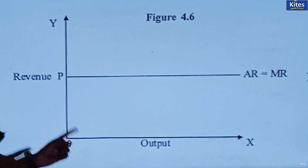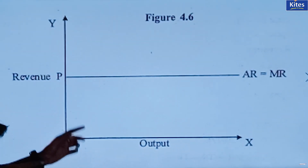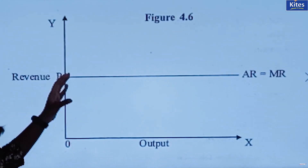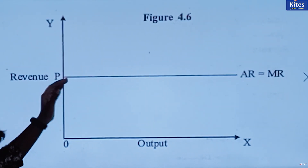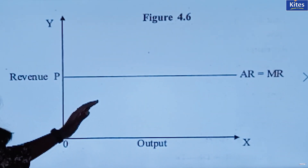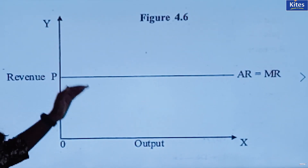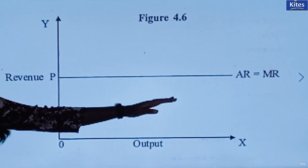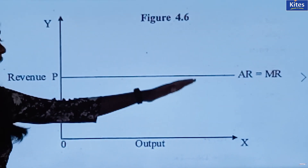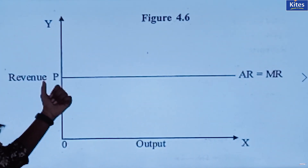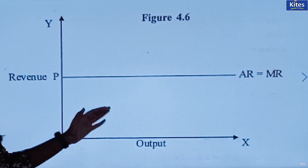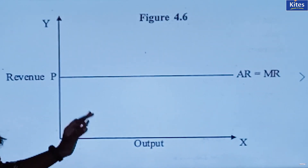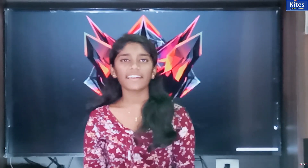The table is depicted in graph form: the graph would be a straight line which is parallel to the x-axis. Here the straight line depicts your average revenue, marginal revenue, and the price. This is for the case of perfect competition market.